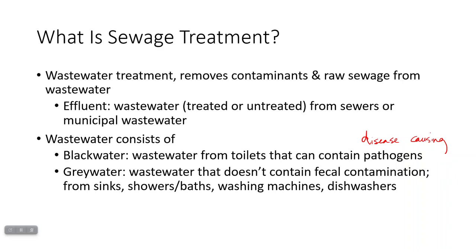If you separate out those sources, in some newer buildings what they're doing is taking gray water and, instead of sending it to a water treatment plant first, they're using it for other purposes on site. For example, it can be used to flush toilets or it can be used for irrigation.